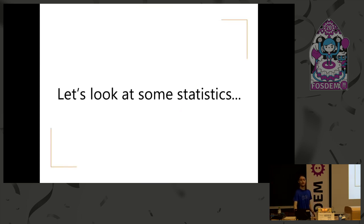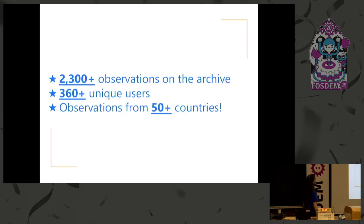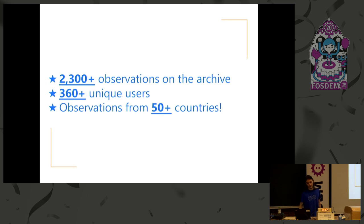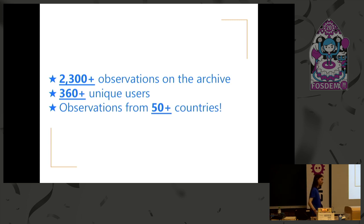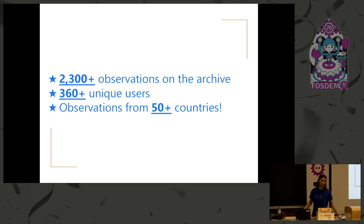Let's look at some statistics. Pictor has been used by 360+ unique users from all around the world, and we have 2,300 observations on the archive. Imagine our goal was to hit 100 unique users in a year — in less than a year, in just a few months, we reached so many users, which is great. These users include students, teachers, educators, professors, amateurs, and even professional astronomers.